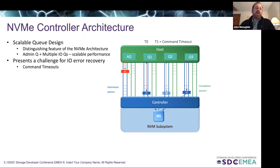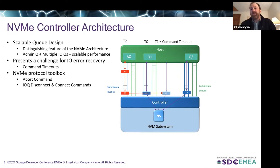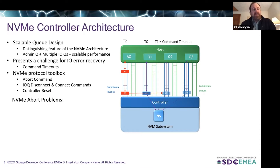Like most protocols, NVMe provides a whole toolbox of commands to deal with error recovery and timeouts. The first level of recovery would be to send an abort command. If the abort command is not successful, IO queue disconnect reset commands can be used to reset the IO queue, thereby clearing all the IOs in the queue. If there is more than one IO or more than one queue, then a controller reset can be used. In this presentation, I will talk about the NVMe abort command in particular and some of the problems we have.